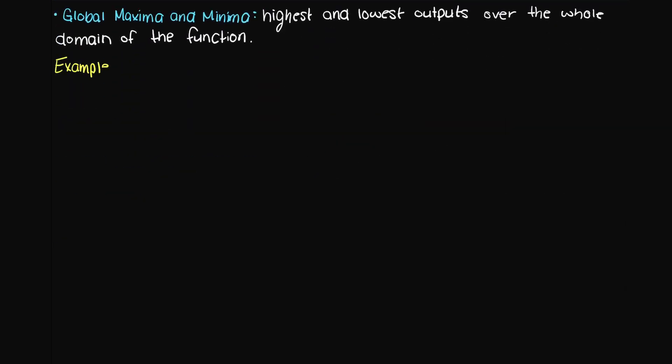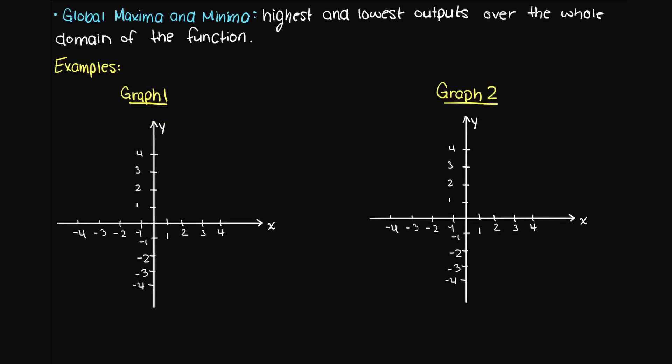Let's practice on the following two graphs. Let's begin here at graph number one. Take a second and try to identify the points at which our function has a relative maxima and minima, and what is the value of the local maxima and minima at those points.